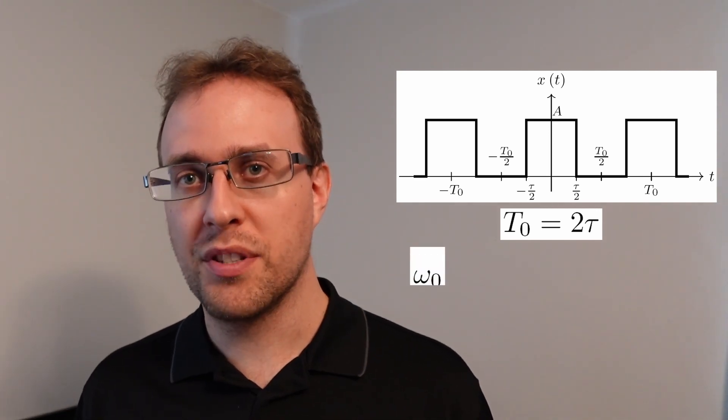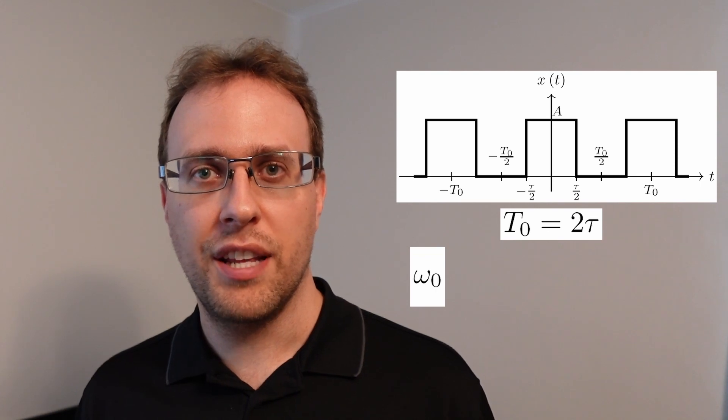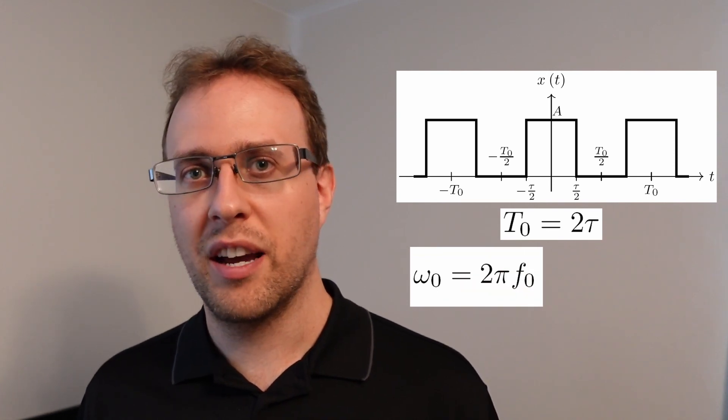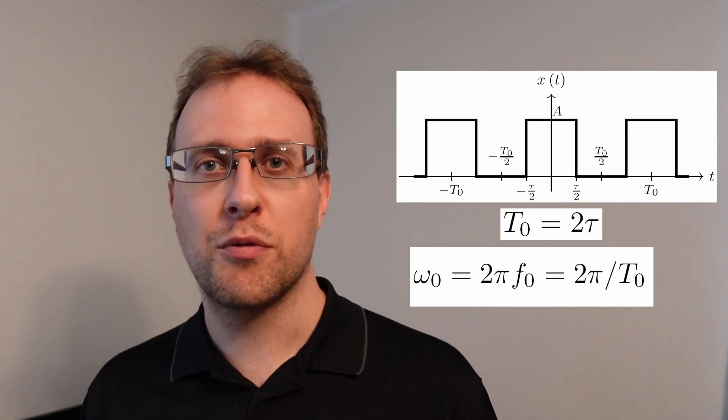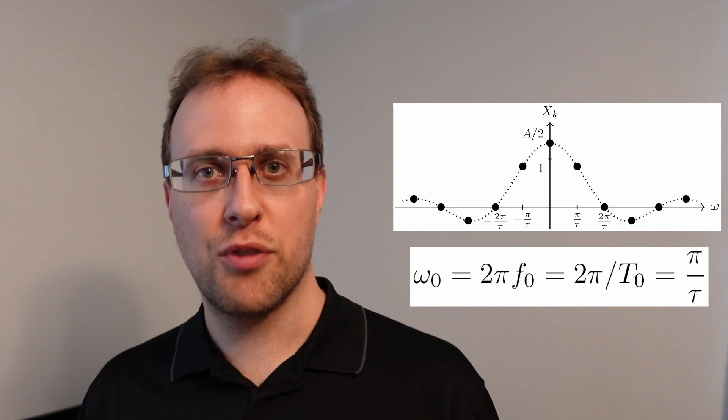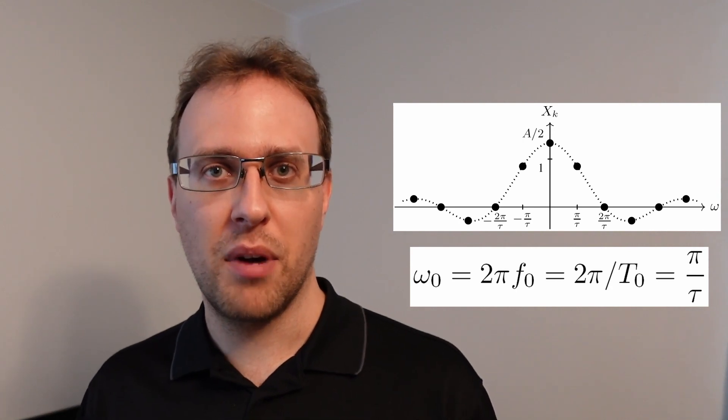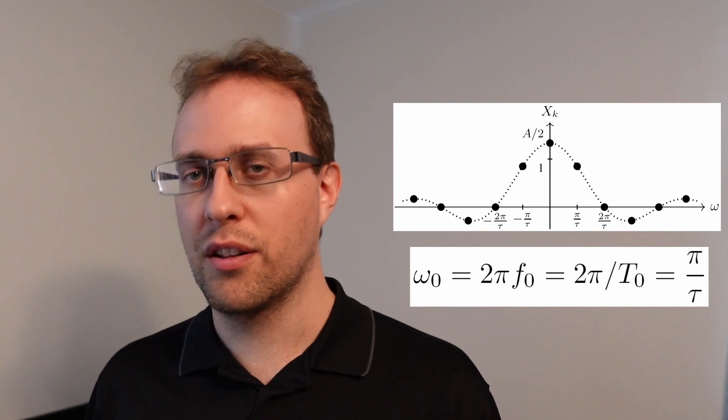From this we need to work out the fundamental frequency omega 0 in radians per second. The fundamental frequency in radians is going to be 2 pi times f or 2 pi over t0, which in this case will be equal to pi over tau. This means that the periodic square wave has spectra that exist at multiples of pi over tau. These are integer multiples. So that includes negative numbers and it includes 0.